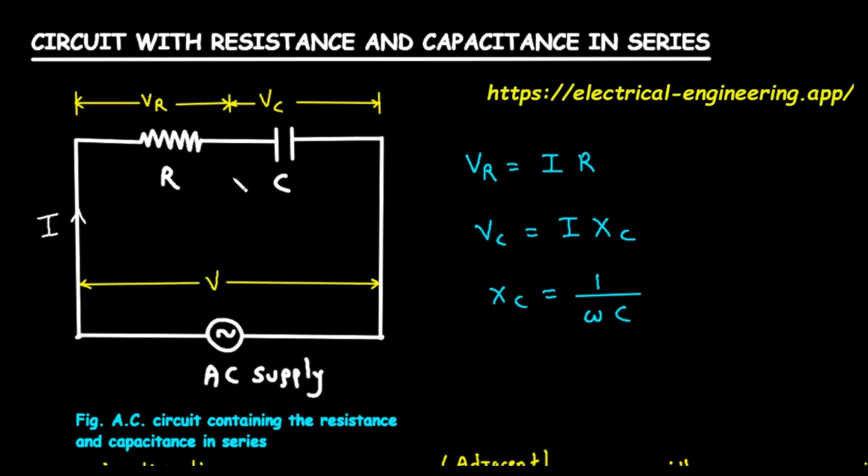Because it's a series circuit, the amount of current I is the same at every single point in the circuit. The first component is a resistor, represented by the zigzag line and labeled R. A resistor's job is to resist the flow of current. The voltage across just the resistor is labeled VR. The second component is a capacitor, represented by two parallel lines and labeled C. A capacitor stores and releases electrical energy. The voltage across just that capacitor is labeled VC.